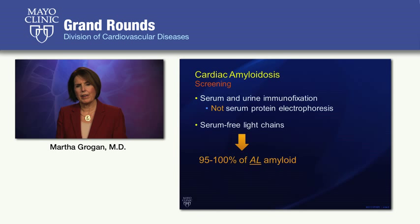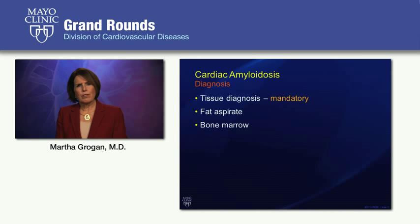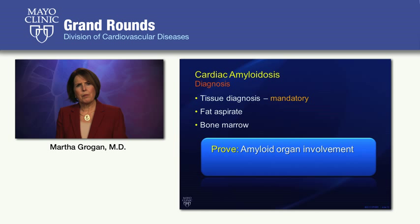Tissue diagnosis is mandatory in cardiac amyloidosis. Even if you have abnormal monoclonal proteins and serum-free light chains, you must get a tissue specimen. Most commonly, the fat aspirate is used as a screening tool and will pick up the majority of AL amyloid patients, but it's only about 20% sensitive in transthyretin cardiac amyloidosis — so in those cases a cardiac biopsy may be needed. You can also use bone marrow, particularly in AL amyloid. The key is to prove amyloid organ involvement and determine the type.